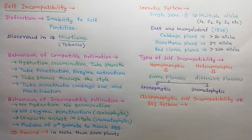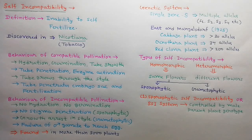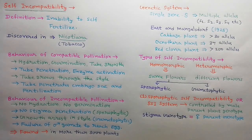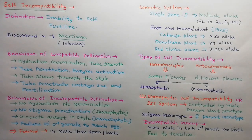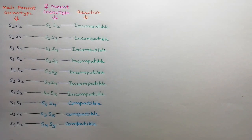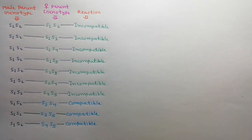First, we will discuss sporophytic self incompatibility, also called the SSI system. If self incompatibility is controlled by the genotype of the male parent plant instead of the pollen grain, it is called the SSI system. Stigma always represents the genotype of the female parent plant. If even one of the alleles present in the sporophytic tissue of the male parent is present in the pistil of the female parent, then all pollen grains produced by the male parent fail to effect fertilization of that pistil.